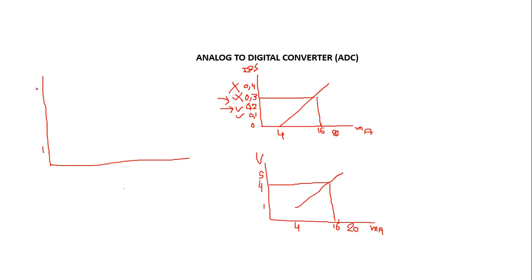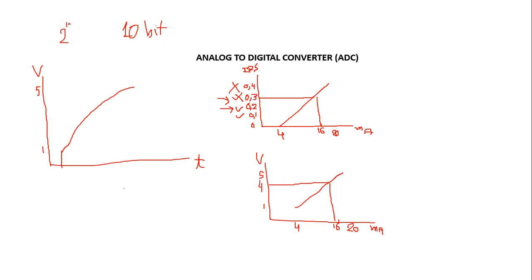We are going to have our signal from 1 to 5 volts through time. The Arduino ADC has 10-bit resolution — 10 bits resolution — which means we are going to have 2 to the power of 10 values, which is equal to 1024 values. So our 5 volts is going to be divided into 1024 steps.